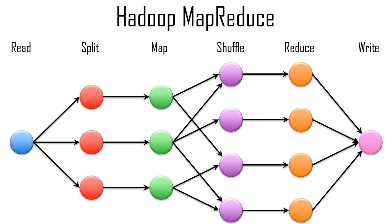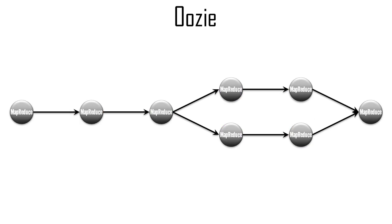Each MapReduce job is a data pipeline and can run in parallel distributed fashion because it forms a DAG. To achieve your desired goal, you almost always need to chain together multiple MapReduce jobs. Another Hadoop component named Oozie enables you to essentially create a DAG of DAGs by scheduling a complex Hadoop data pipeline, which is defined by coding an XML document.